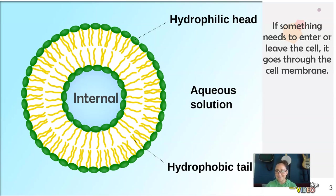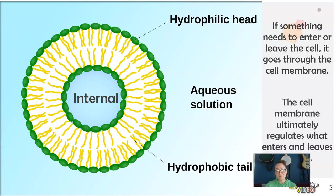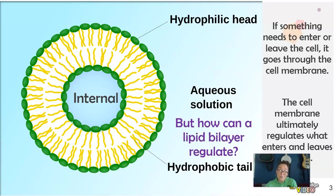But really, if a cell needs something, it has to enter and leave through that cell membrane. They don't have mouths or something. So anything that needs to enter or leave the cell needs to pass through that lipid bilayer. And we'll talk about the how in this unit. So the cell membrane ultimately is what regulates what enters and leaves the cell. But how can a lipid bilayer regulate? That is the big question.